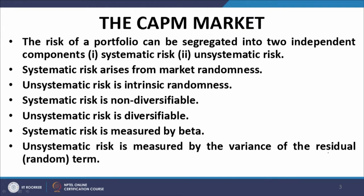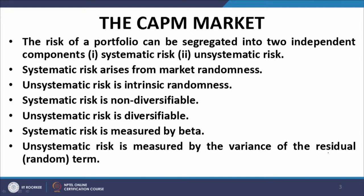Diversification is one of the very common approaches to risk mitigation in the context of portfolio management. If you combine a number of securities — the larger the number of securities — the greater would be the reduction in unsystematic risk, because unsystematic risk is basically random. If you have a large enough combination of random variables, it is quite likely that you end up with lesser variance, so the unsystematic risk goes down. Therefore, the systematic risk is undiversifiable and the unsystematic risk is diversifiable.